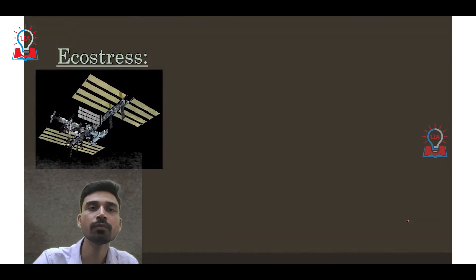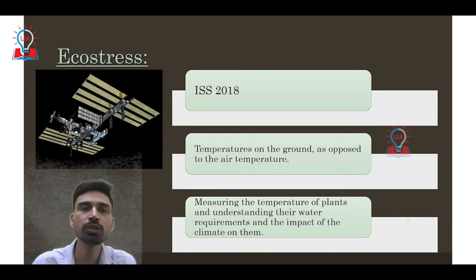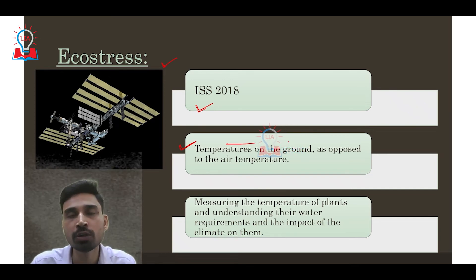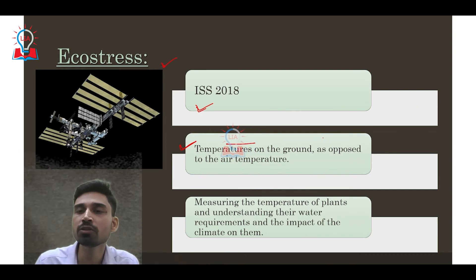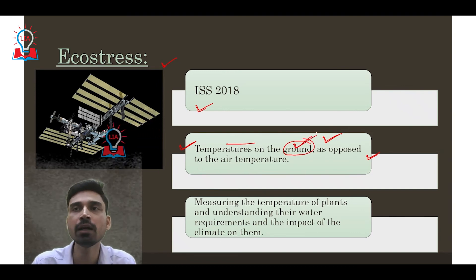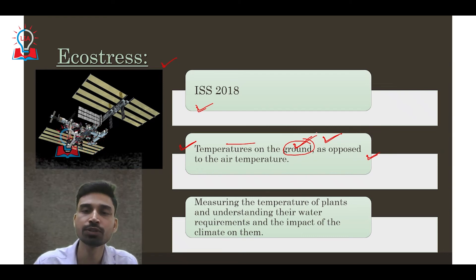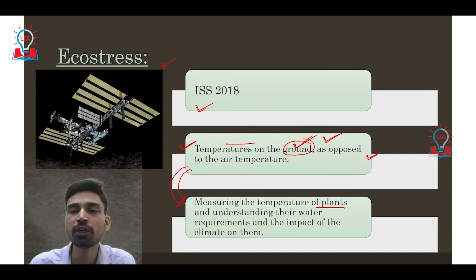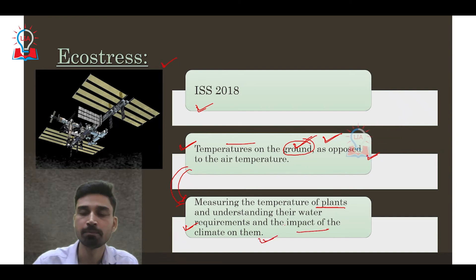Since we discussed ECOSTRESS, let us briefly describe it. ECOSTRESS was sent to the International Space Station in 2018, and its main function is to measure ground temperature — not air temperature or atmospheric temperature. This is very important because air temperature changes at a much faster rate than ground-level temperature, so measuring ground temperature gives a much fairer idea of how heat is being distributed, trapped, or released from any given region. ECOSTRESS also aimed to measure the temperature of plants to understand their water requirements and how those requirements impact the climate and climate change around them.